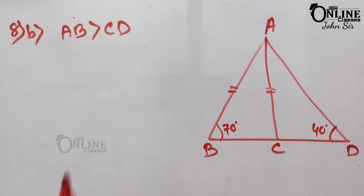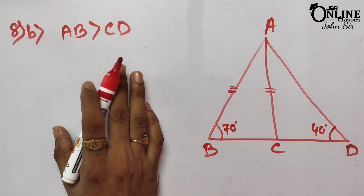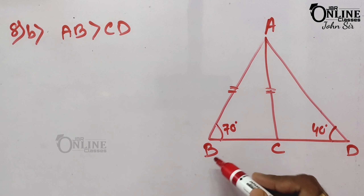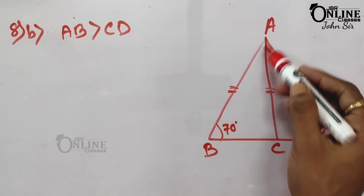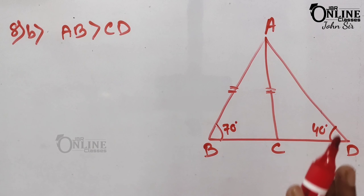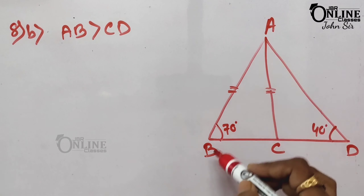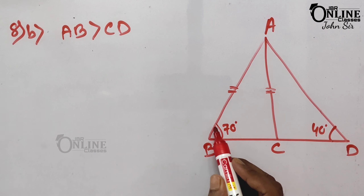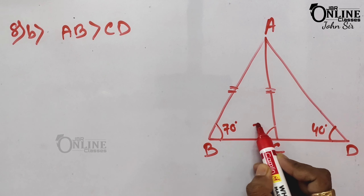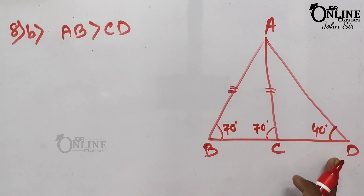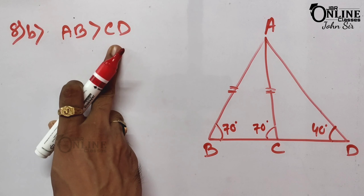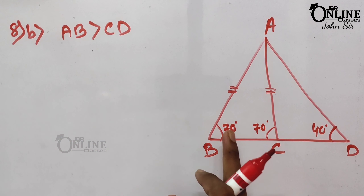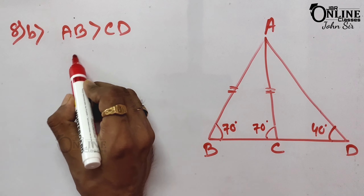Now sum number 8B. Here ABD is a triangle and AC is a line. It is given that AB = AC. If AB = AC, then the base angles are equal, so this angle = 70° and the other = 70°. One angle = 40° is given. We have to show that AB > CD.